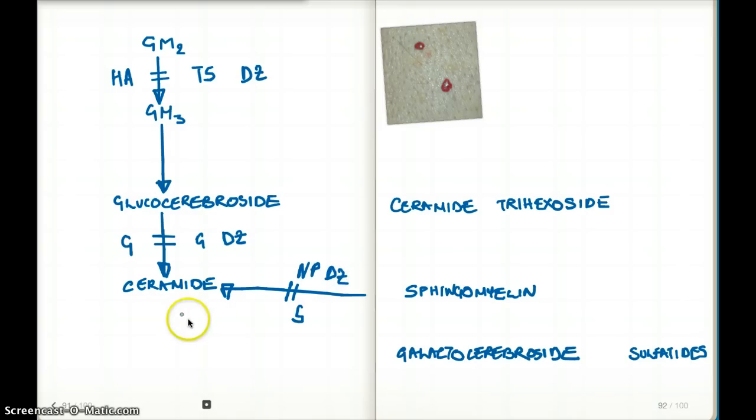Another pathway that gives rise to ceramide is galactocerebroside. The enzyme in this pathway is galactocerebrosidase. When galactocerebrosidase is inhibited, we have Krabbe's disease. Don't confuse galactocerebrosidase with galactosidase.